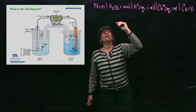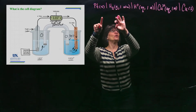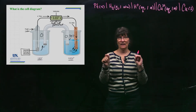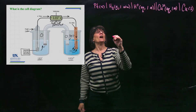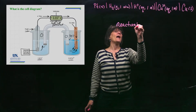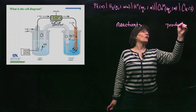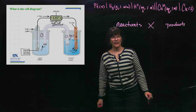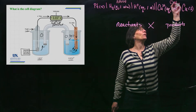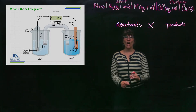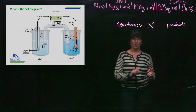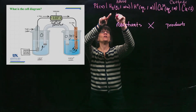A caution: when students see a cell diagram, they sometimes assume the left side shows reactants and the right side shows products — that is dead wrong. The left side is the anode and the right side is the cathode; that's all we can say. Each has its own half reaction. To find reactants and products for the overall reaction, you must write out the half-cell reactions.